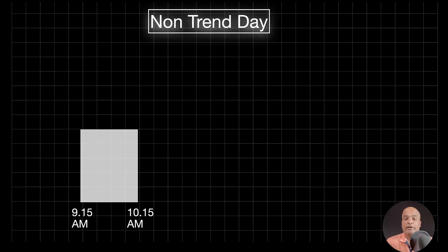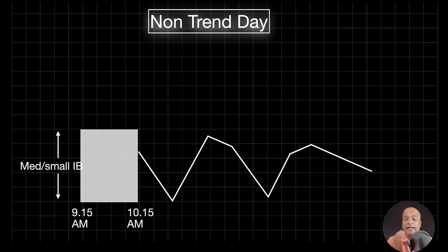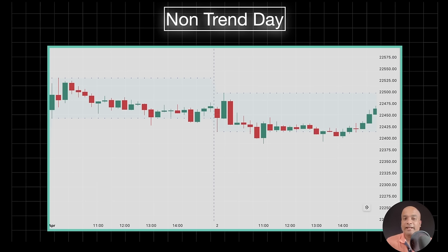In a non-trend day, which is also very rare, we get this day structure whenever the market is waiting for something — like a Fed event, an RBI event, or some important result announcement. A non-trend day is characterized by a medium or small IB, and price stays within the IB range most of the time — from 9:50 to 3:30, the price stays within the same range. This indicates a completely flat market. When you see two consecutive non-trend days it indicates the market is desperately waiting for something before it starts its original move.